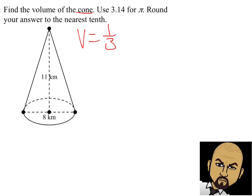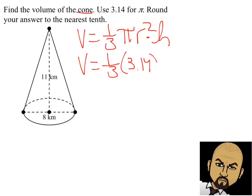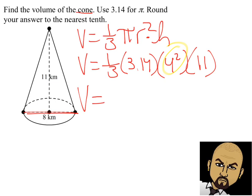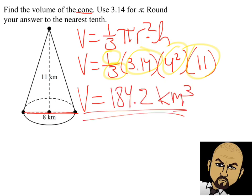Here is another cone. The formula is the volume equals one-third times pi times the radius squared times the height. Pi is 3.14. I don't give you the radius — I gave you the diameter — so you need to be careful. The radius is half of 8, which gives us 4 squared. The height is 11. On your calculator, multiply 4 times 4, then by 11, then by 3.14, and divide by 3. Round to the nearest tenth, and that gives us a volume of 184.2 kilometers cubed.